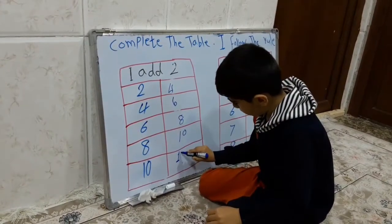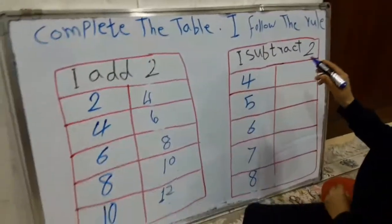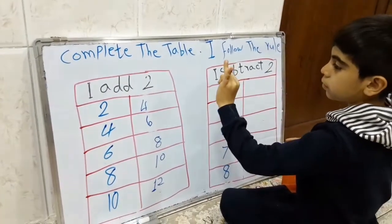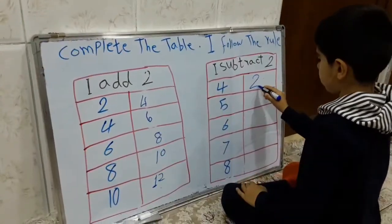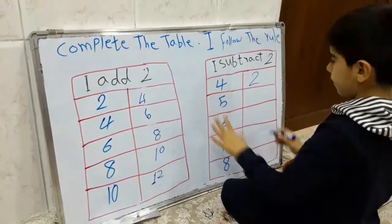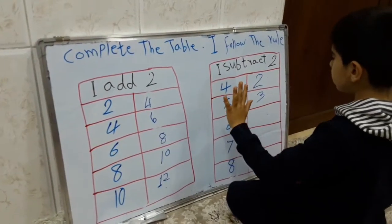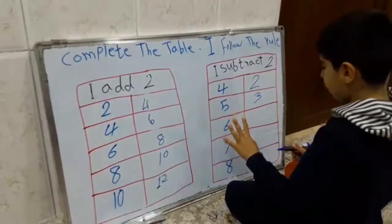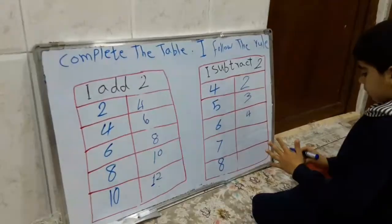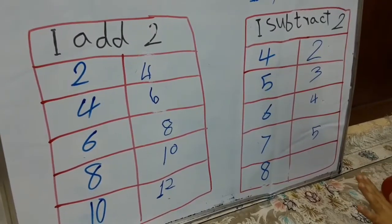Subtract 2. I subtract 2. 4 minus 4 equal to 2. 5 minus 2 equal to minus 3. 6 minus equal to 4. 7 minus 5. 8 minus 6.